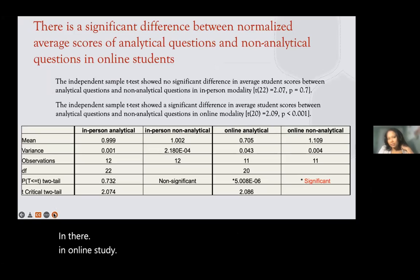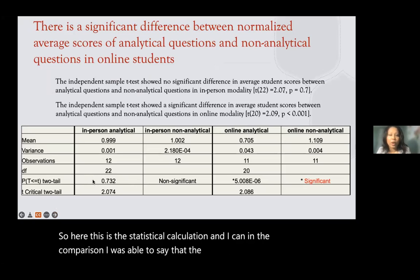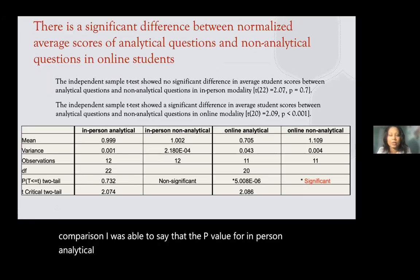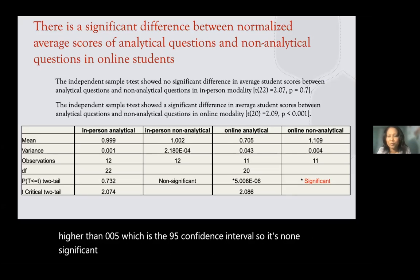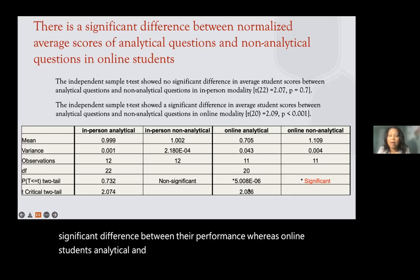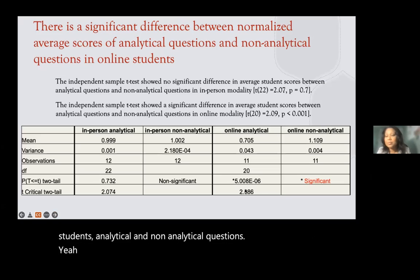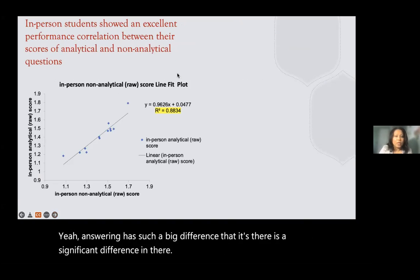Statistically, the p-value for in-person analytical versus non-analytical questions was 0.732, which is above 0.05, indicating no significant difference in performance. For online students, the difference between analytical and non-analytical performance was statistically significant, confirming the observed gap.